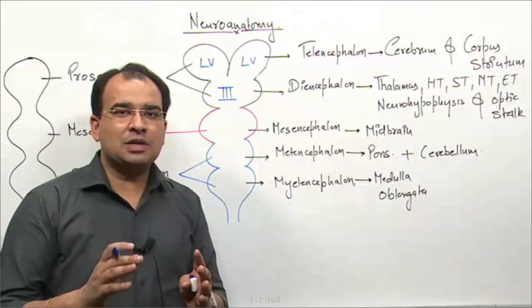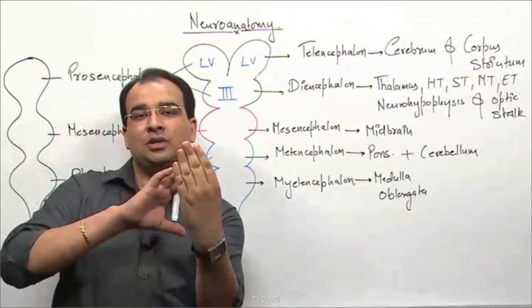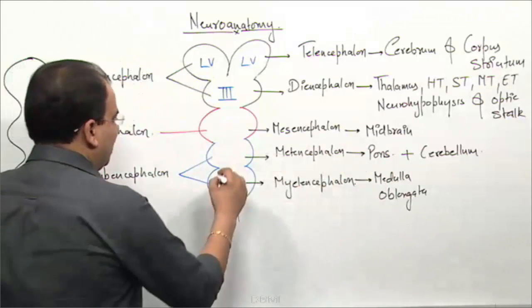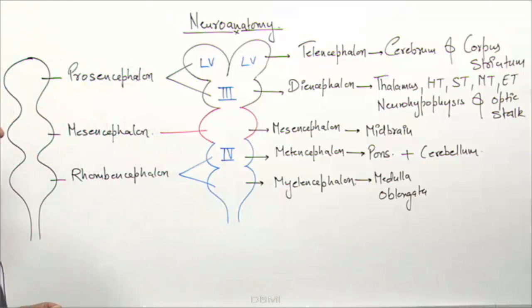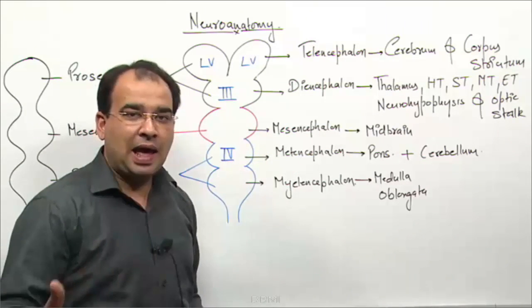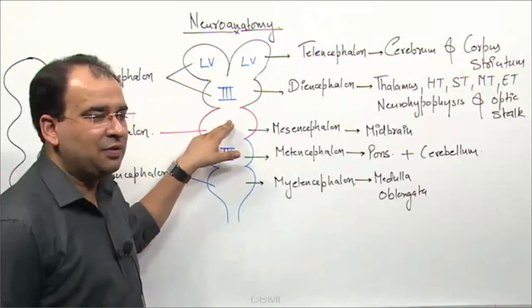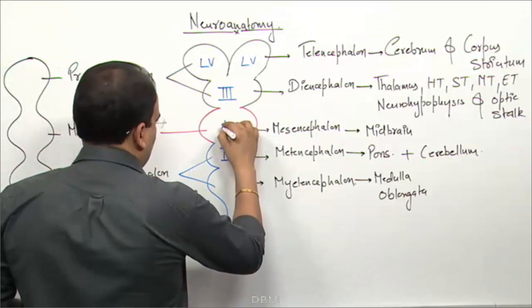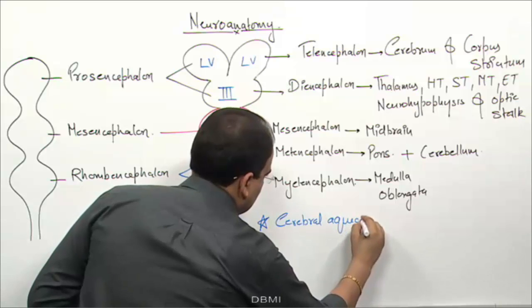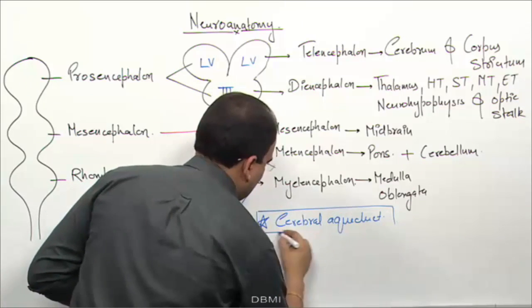The fourth ventricle is present between the pons and cerebellum, both of which are derived from the metencephalon, so the cavity of the metencephalon gives rise to the fourth ventricle. The third and fourth ventricles are connected to each other by the cerebral aqueduct. The cavity of the mesencephalon gives rise to the cerebral aqueduct — also known as the aqueduct of Sylvius — which is found in the midbrain.